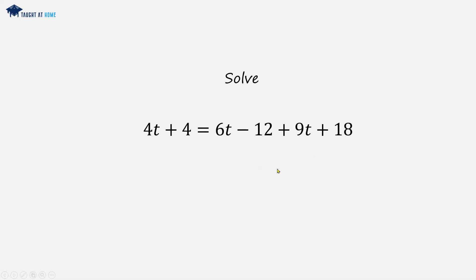We've got 6t plus 9t, so that becomes 15t. And minus 12 plus 18 becomes plus 6.